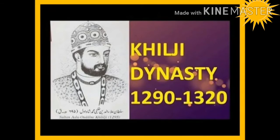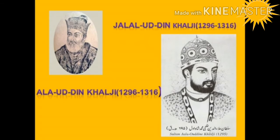The Khalji dynasty ruled from 1290 to 1320. The greatest ruler of this dynasty was Alauddin Khalji, who ruled from 1296 to 1316.